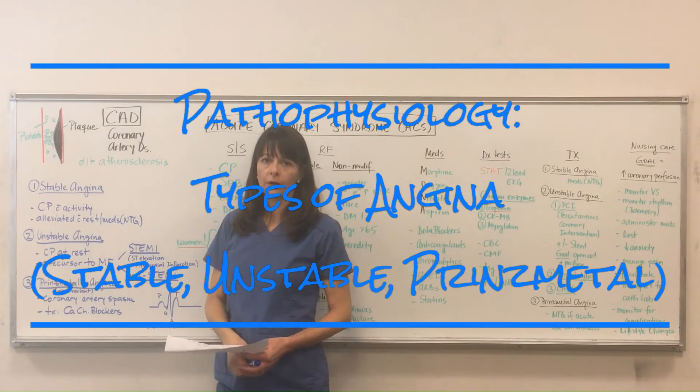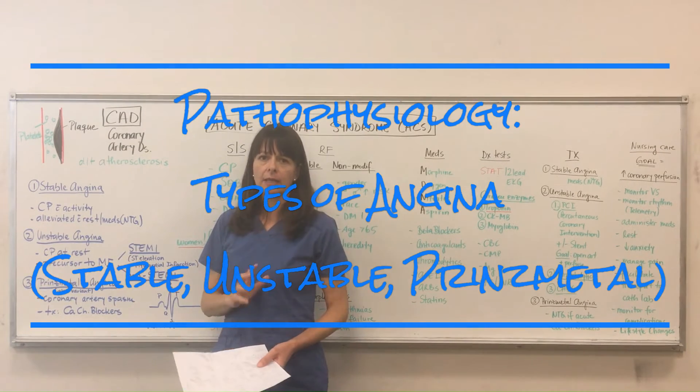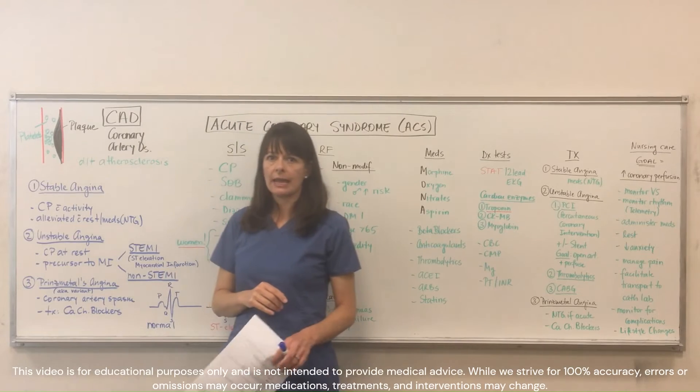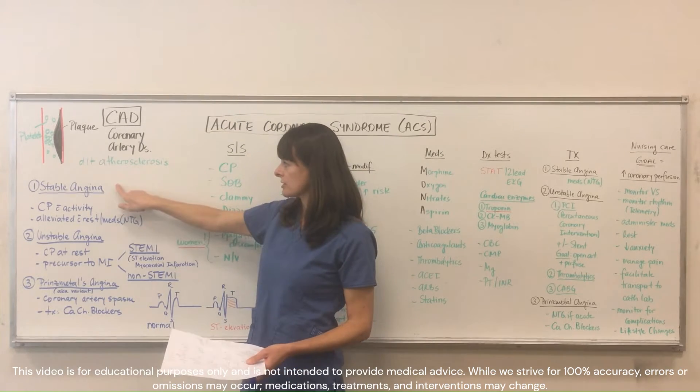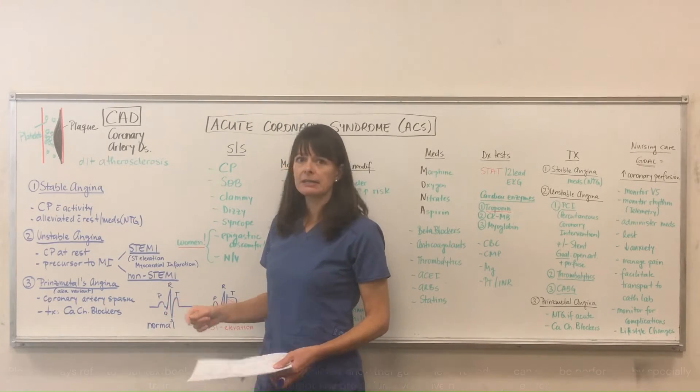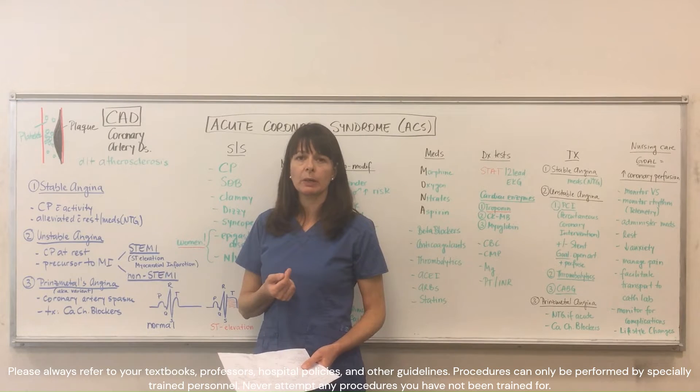When we think about coronary artery disease, there are basically three different types of angina. First of all, stable angina, which is basically the patient complaining of chest pain with activity.